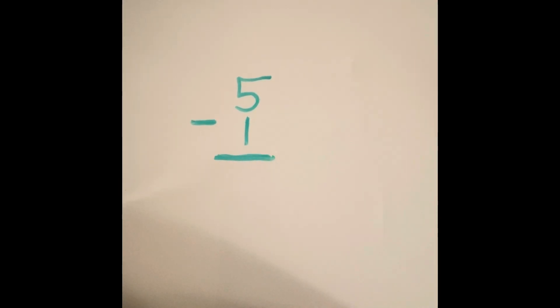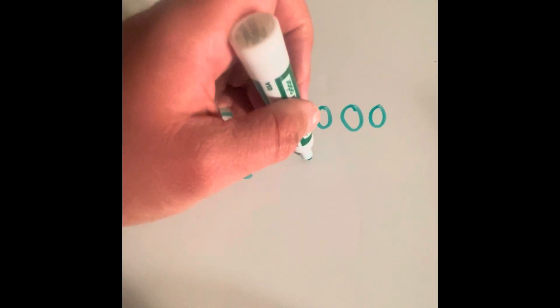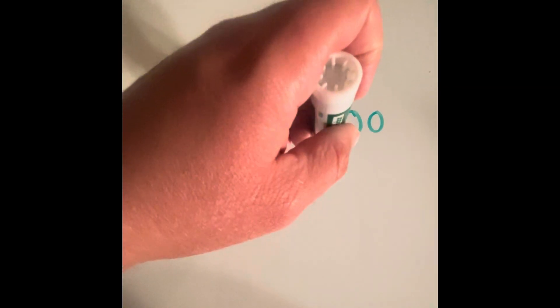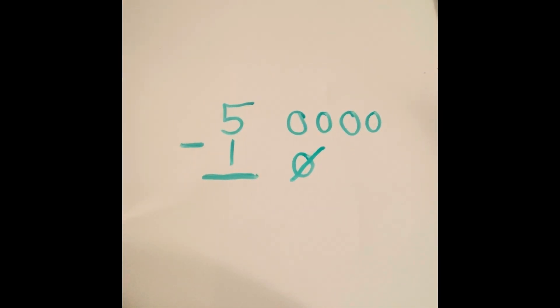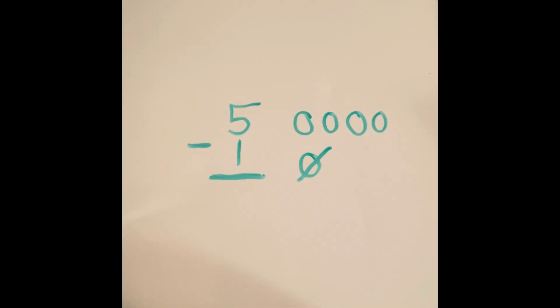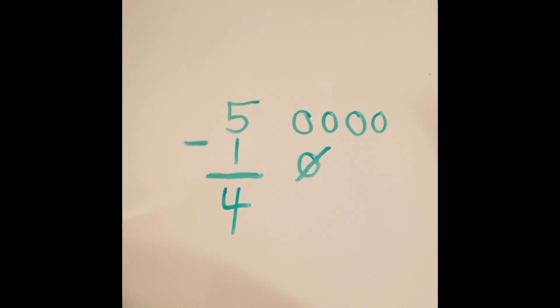Five minus one. For this problem, I'm going to make five circles, cross out one circle, then count how many circles are left. Drawing five circles: one, two, three, four, five. Now I'm crossing one circle out. Counting how many circles are left not crossed out: one, two, three, four. So there are four circles left not crossed out. Five minus one equals four.